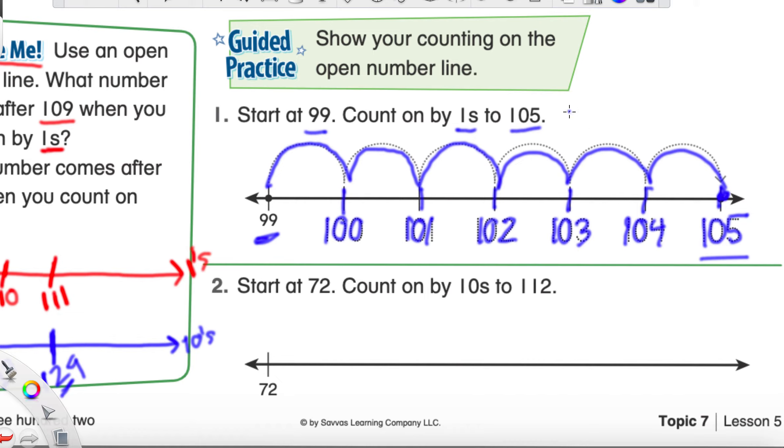So, if we were to, let's just be a little crazy. If they were to give us a problem that said 99 plus some random number equals 105. Guess what? This open number line could help us solve that. And, we can count the jumps. One, two, three, four, five, and six. That's it. So, 99 plus six will give us 105.